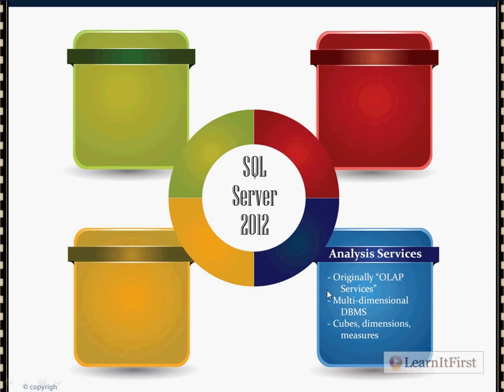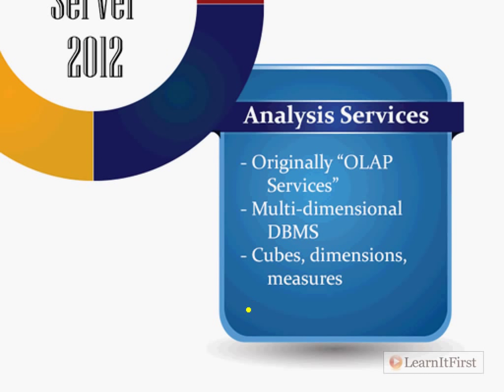Analysis services — SSAS, SQL Server Analysis Services — is a multi-dimensional database. The database engine is relational; analysis services is the multi-dimensional database. Reporting services is not a database — it's a report server. Integration services is not a database — it shuttles data from point A to point B. Analysis services is a database, but it's a specific type called a multi-dimensional database.